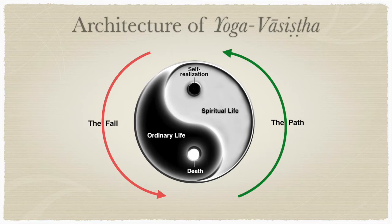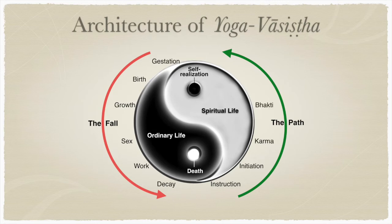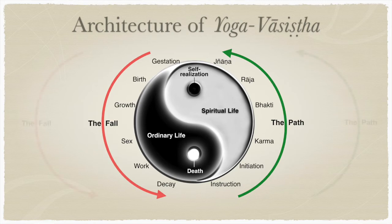The steps of the fall are gestation, birth, growth, sex, work, decay, and finally death. This is the actual life pattern of most beings in the material world — after death, they simply return to gestation and start all over again, except for those interested in self-realization. For them, the next stage includes instruction, initiation, karma yoga, bhakti yoga, raja yoga, and jnana yoga, leading to self-realization and liberation from material existence.